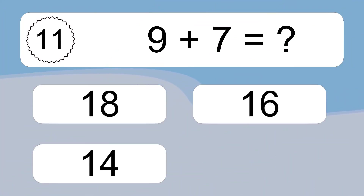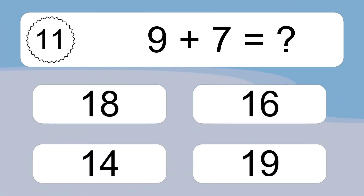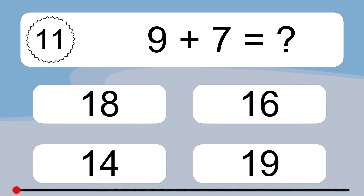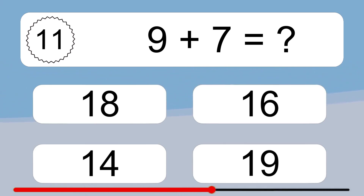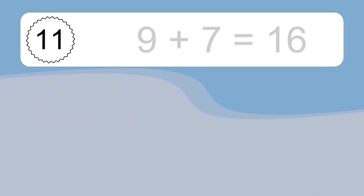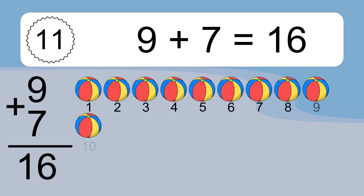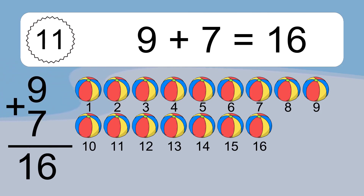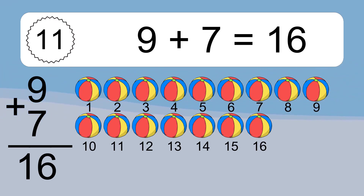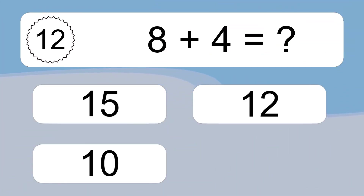9 plus 7 equals what? 9 plus 7 equals 16. 1, 2, 3, 4, 5, 6, 7, 8, 9, 10, 11, 12, 13, 14, 15, 16.